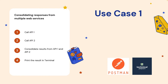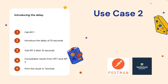Let's move to Use Case 2. Here I'm trying to introduce a delay. Sometimes it is required to delay a second API call or action by some seconds. Using the previous example — calling API one then API two with no delay — let's say I want to introduce a delay of 10 seconds between the two API calls. I can do that with Postman Flow. The steps are: call API one, introduce a 10-second delay, call API two after 10 seconds, consolidate the results, and print to the terminal.